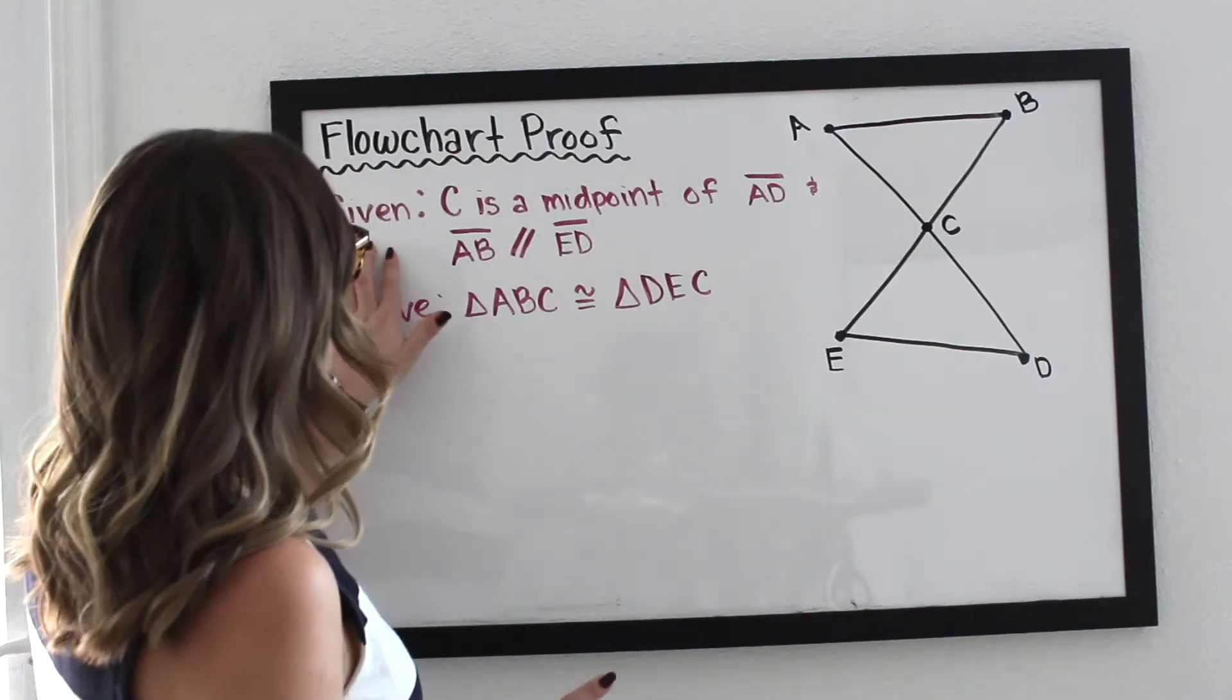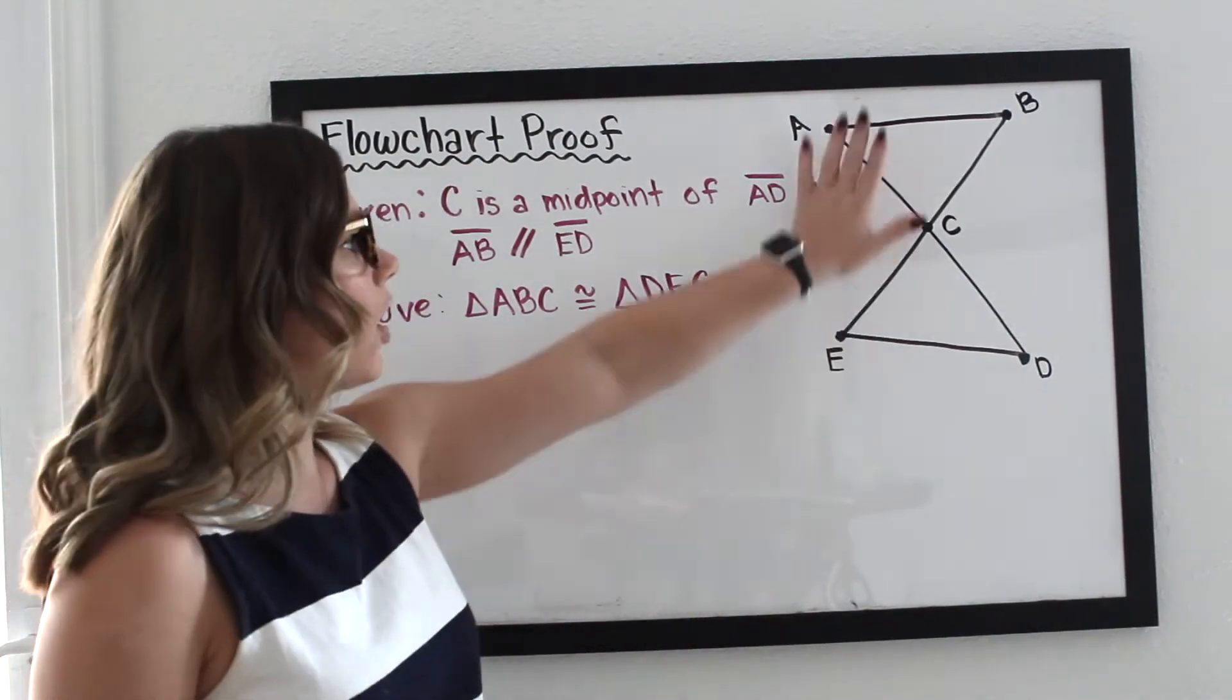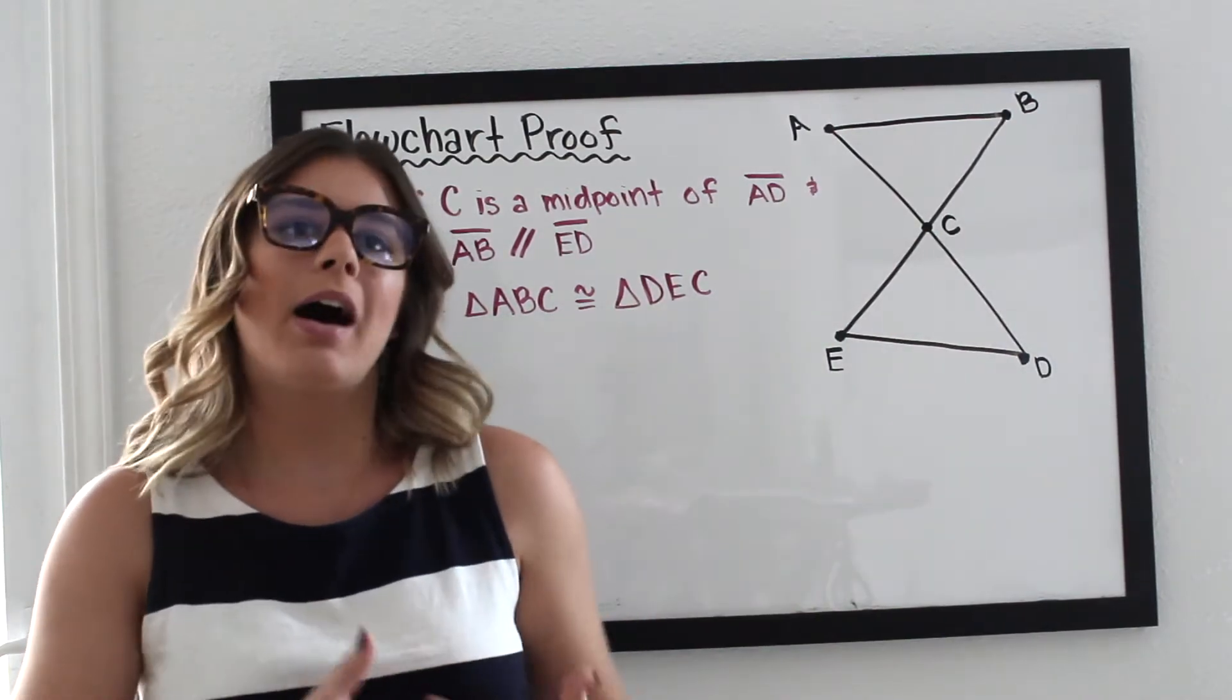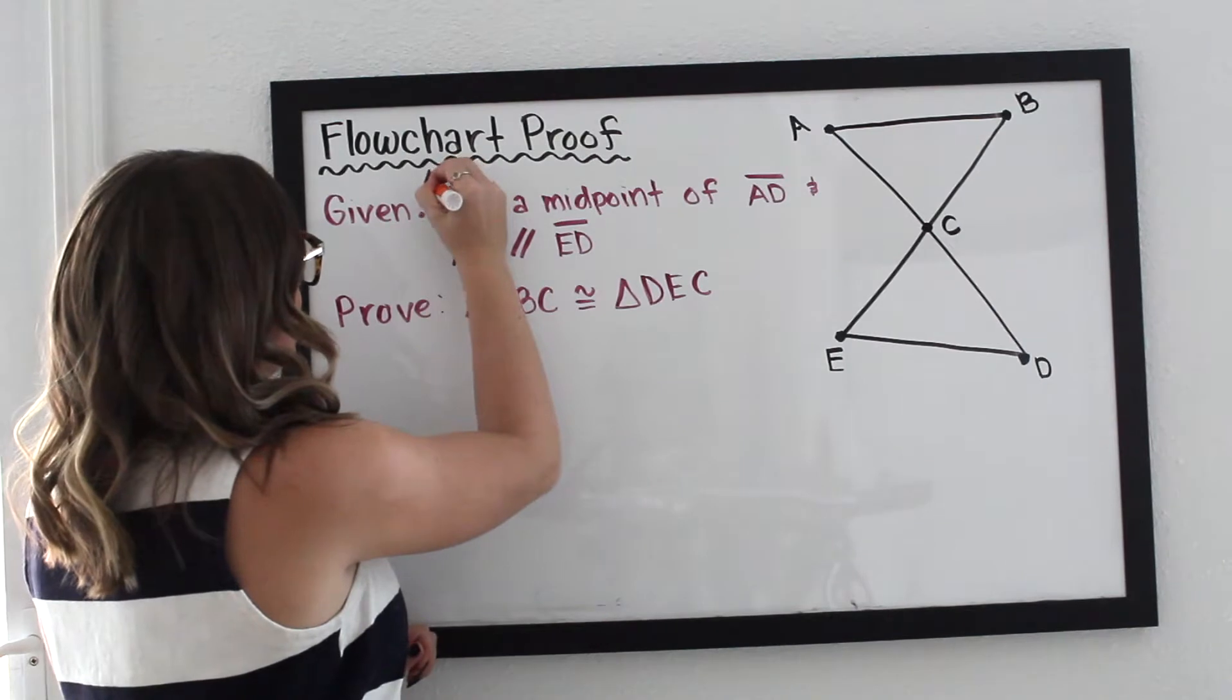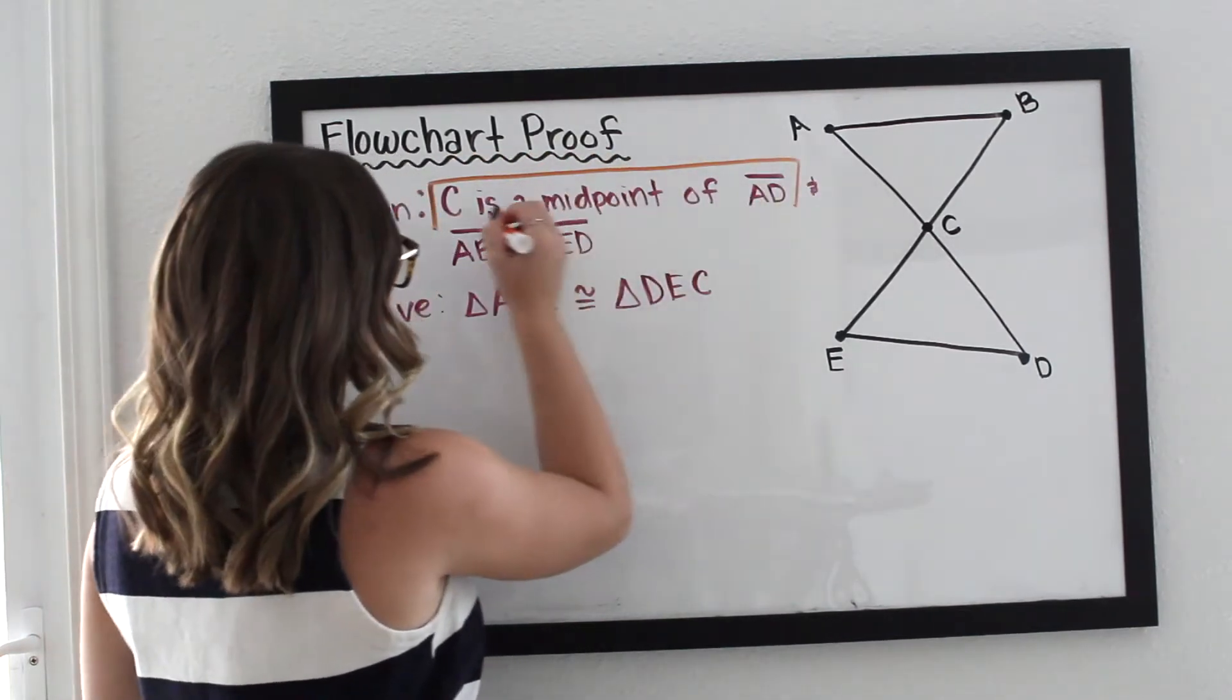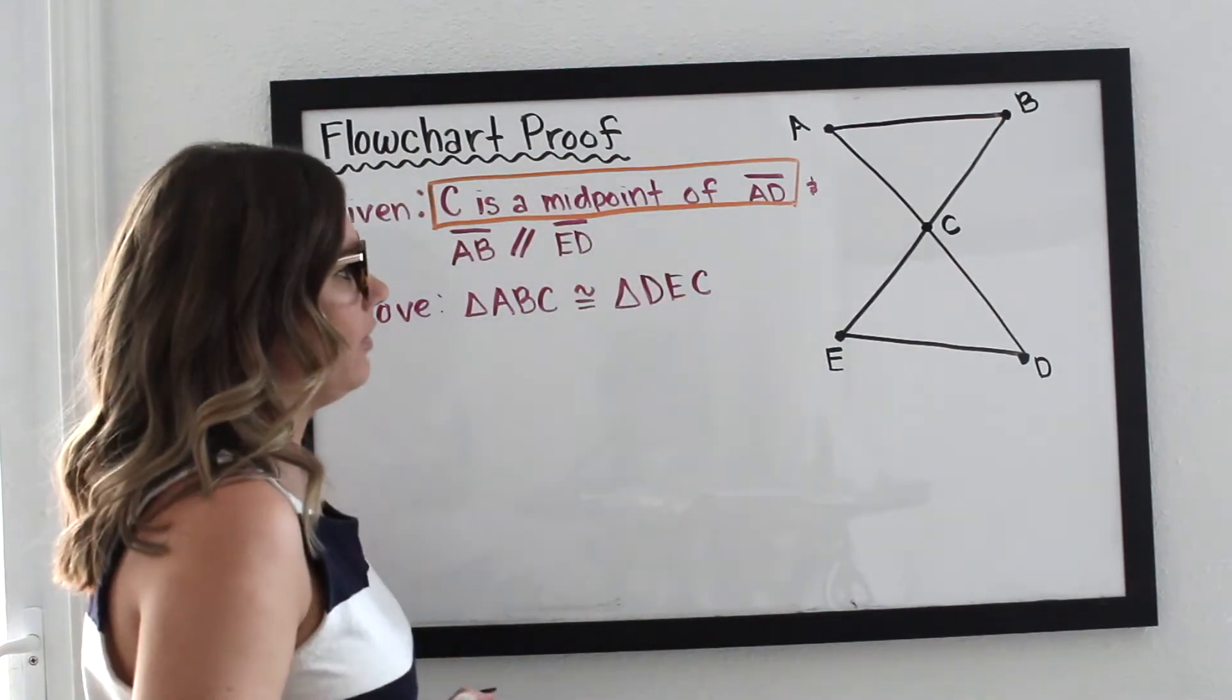Step one: I look at what's given, and then whatever is given, I actually draw it right on my diagram so I have a visual representation of the information I've been given that I can use later. So I'm going to say, okay, I have C which is a midpoint of AD. Okay, so this is my first piece of given information.